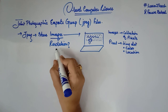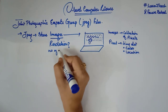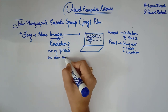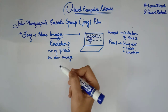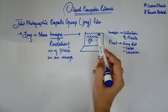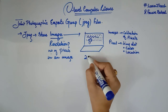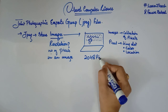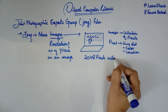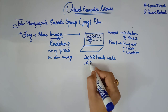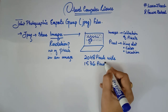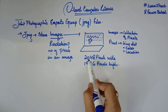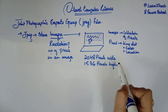Now, what is resolution? The term resolution stands for the number of pixels in an image. For example, if I have an image that is 2048 pixels wide and 1536 pixels high, that tells us the pixel dimensions of that image.